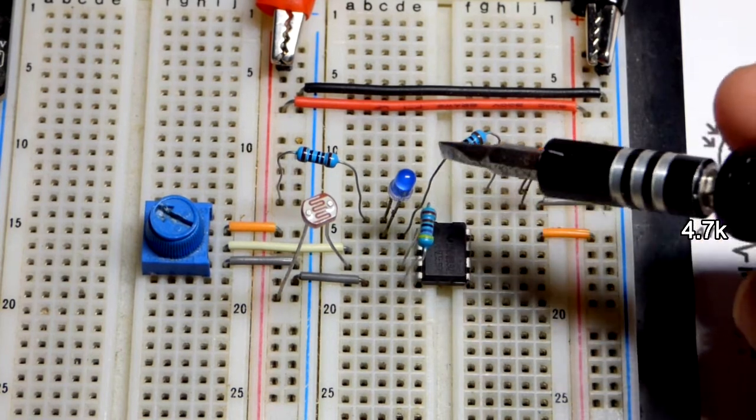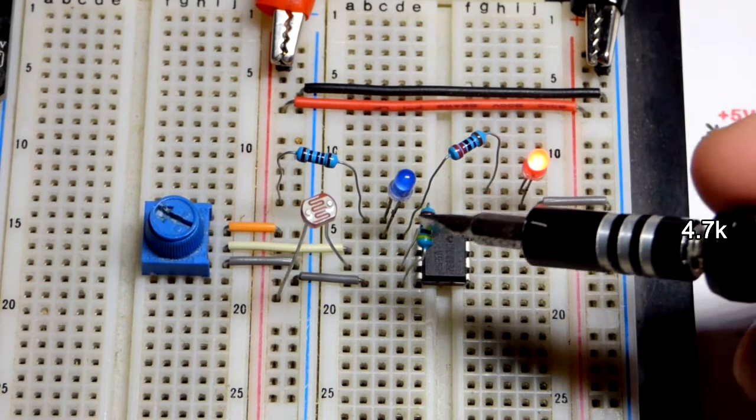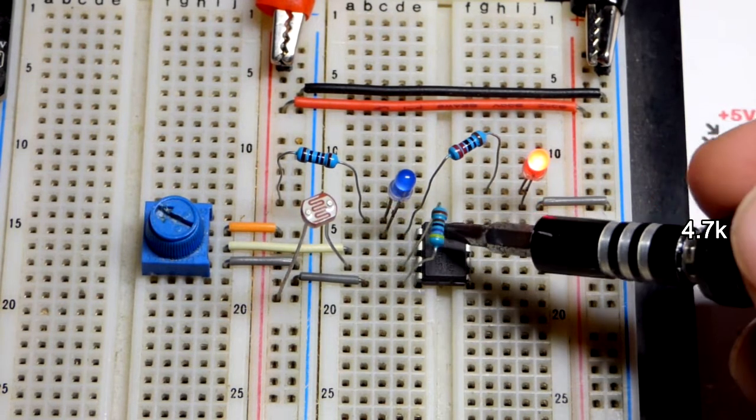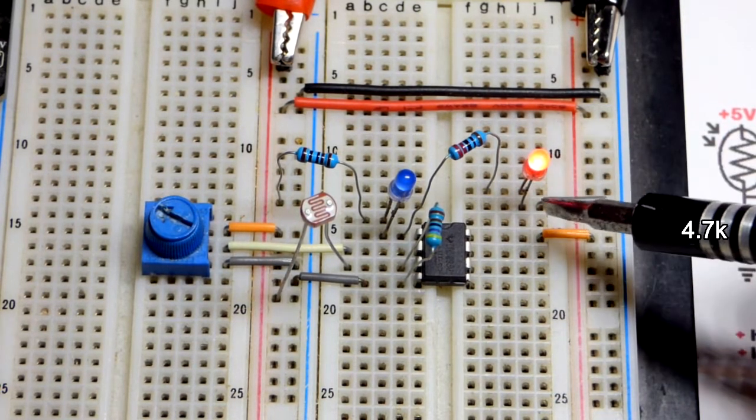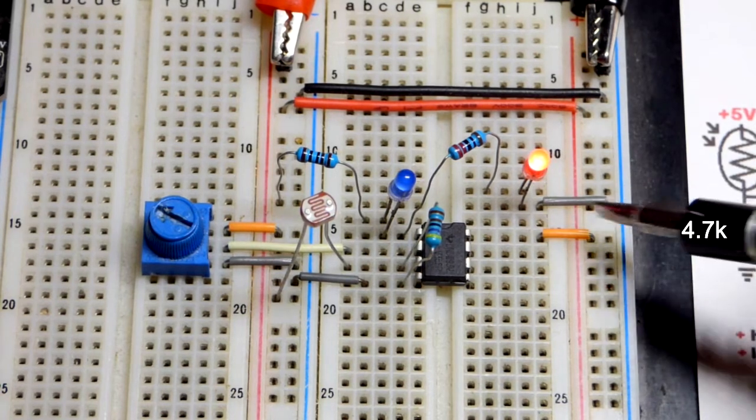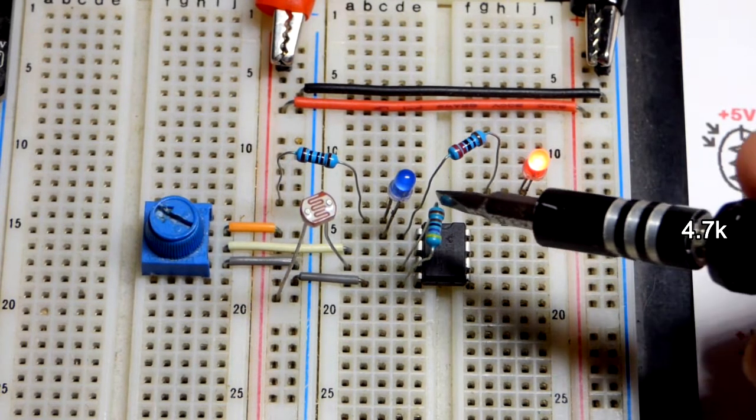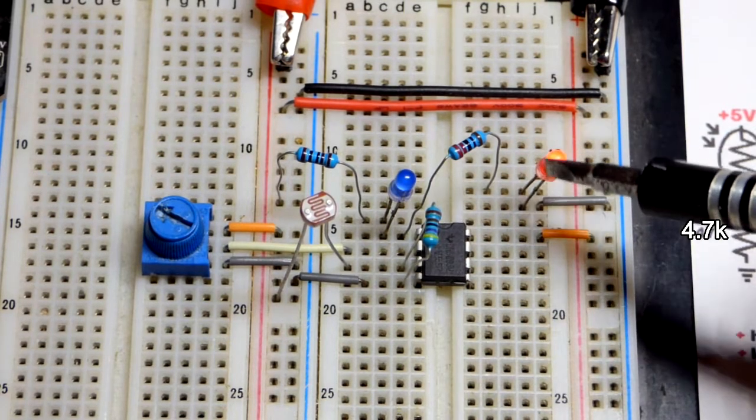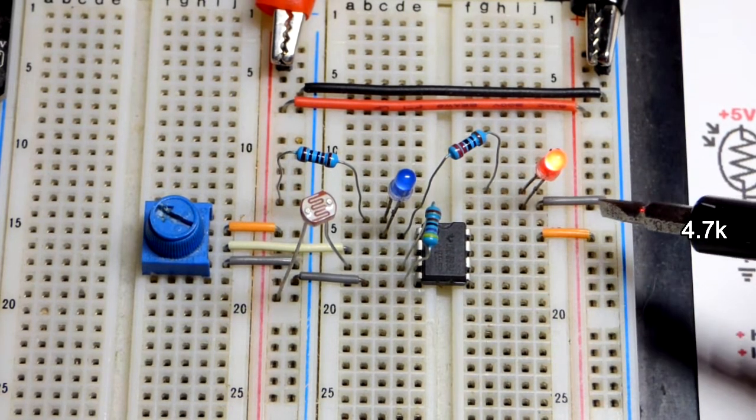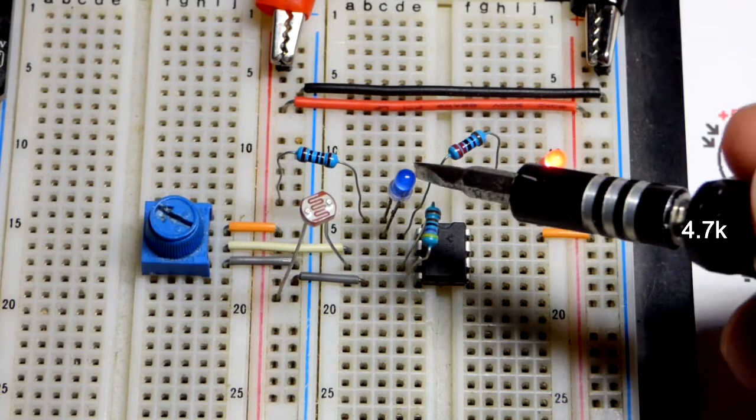And then there you can see the output is the top pin for this integrated circuit. 220 ohm resistor coming to the red LED. Long lead anode. Short lead cathode to ground. It's lit up right now because the output is high. It's as close to the positive supply as it can get. But since it's a single supply op amp it's going to drop down a volt or so.